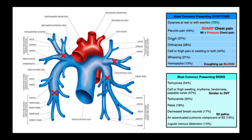Patients might also have a cough, orthopnea, or calf or thigh pain, swelling, or both. Also wheezing and hemoptysis — hemoptysis is coughing up blood. Notice that only 13% of patients with a pulmonary embolism will have hemoptysis; however, if the patient does have hemoptysis and there's no acute injury that would cause coughing up blood, that should put pulmonary embolism on your radar pretty strongly.